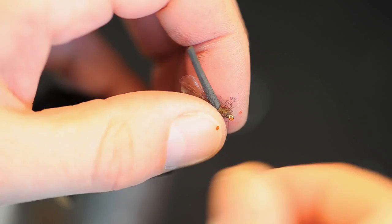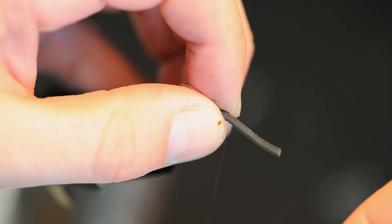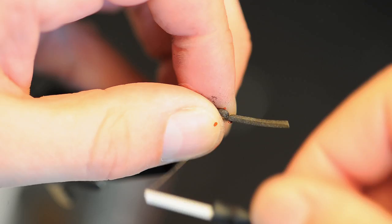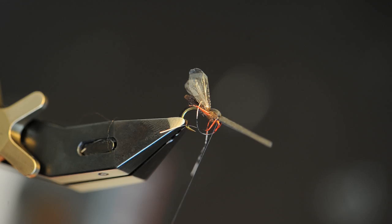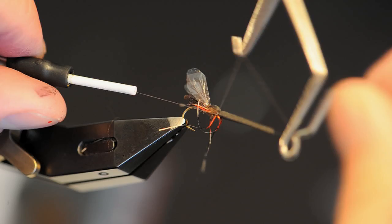Tie in the foam, not too tight so it loses floatability. Tie a couple of whip finishes and the fly is almost completed.